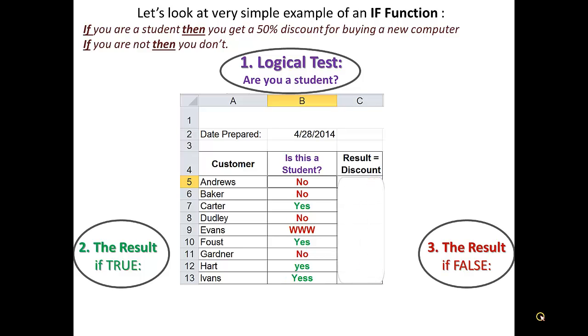Let's focus on the first record for the customer Andrews. The logical test here is, is Andrew a student? We look and we see that the answer for this question is in cell B5. Then, our question becomes, is cell B5 yes? Which in mathematical terminology is translated into, is B5 equal to yes?